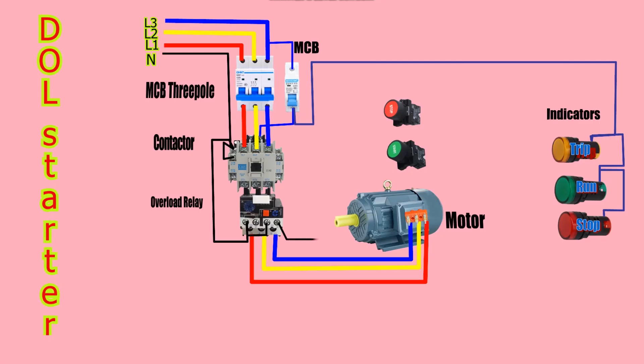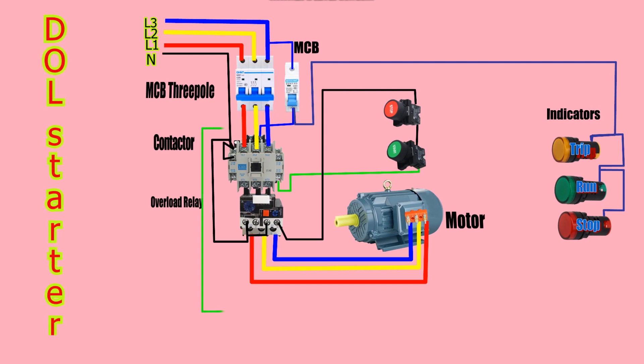The wire from the 96 contacts is connected to the stop push button's first terminal. The second terminal of the stop push button is connected to the first terminal of the start push button. The wire then goes from the second terminal of the start push button to the normally open auxiliary contact of the contactor A1.